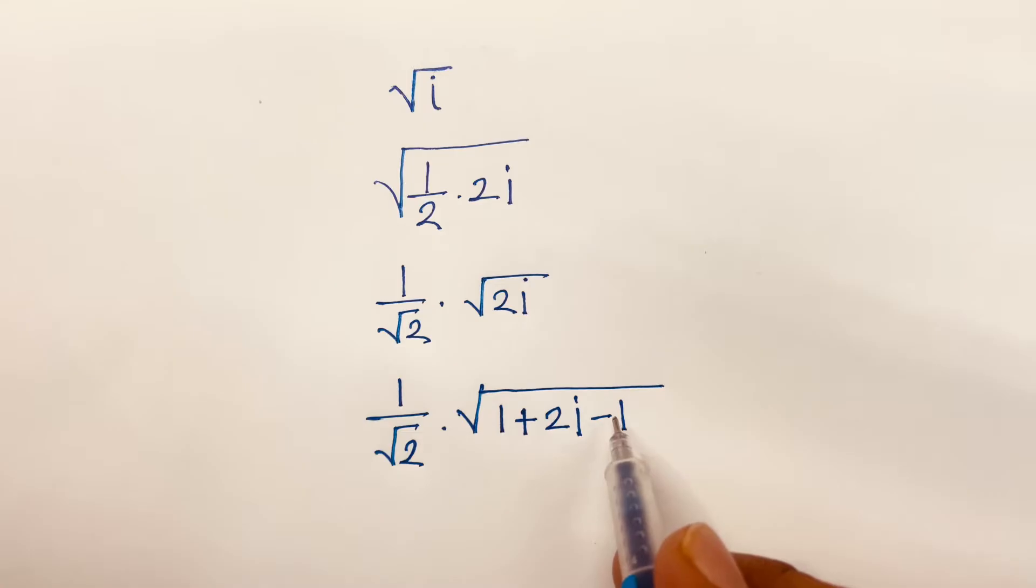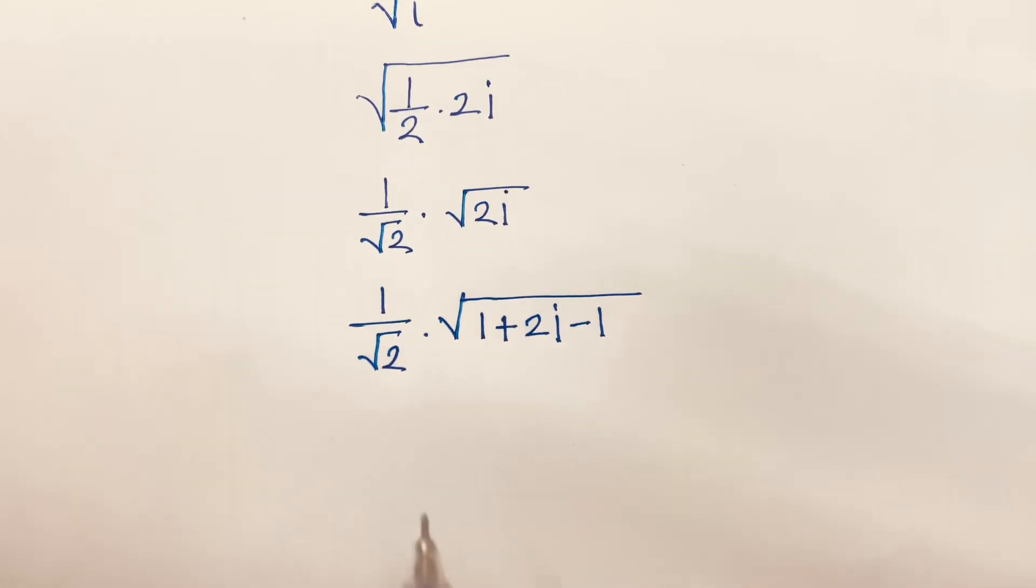Look, 1 minus 1 is 0, so we will find out again square root 2i. Then, I can say here is 1 over square root 2.